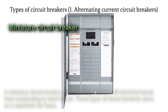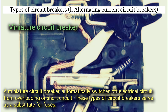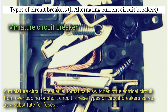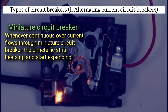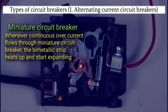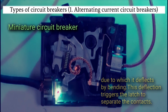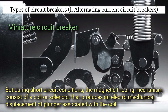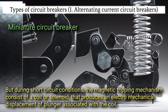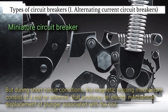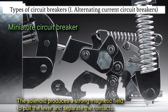Miniature circuit breaker. A miniature circuit breaker automatically switches off the electrical circuit from overloading or short circuit. This type of circuit breaker serves as a substitute for a fuse. Whenever continuous over current flows through a miniature circuit breaker, the bimetallic strip heats up and starts expanding, due to which it deflects by bending. This deflection triggers the latch to separate the contacts. But during short circuit conditions, the magnetic tripping mechanism consists of a coil or solenoid that produces an electromechanical displacement of a plunger associated with the coil. The solenoid produces a strong magnetic field to pull the lever and separate the contacts.